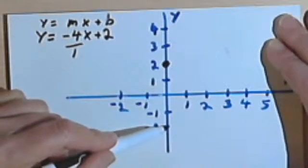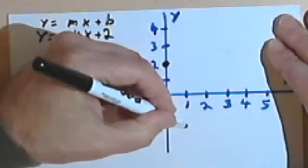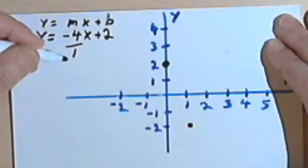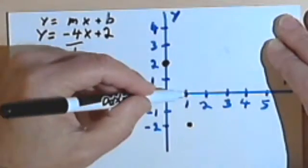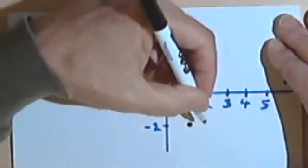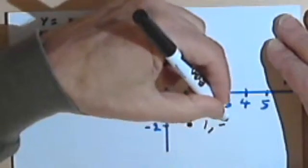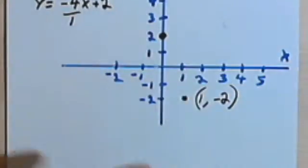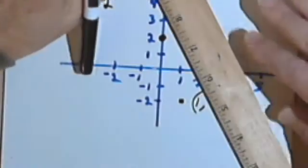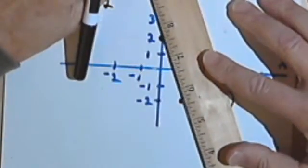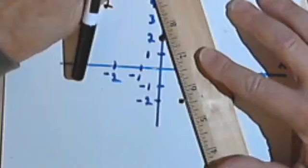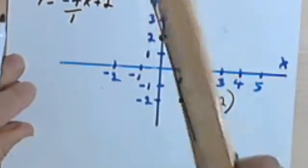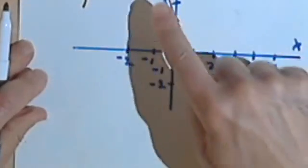And then the run is 1, so I'm going to go over 1. And while I'm here, I should probably label this. So this looks like I'm at 1 and negative 2. And then take my straight edge, connect the two points, and there's my line.